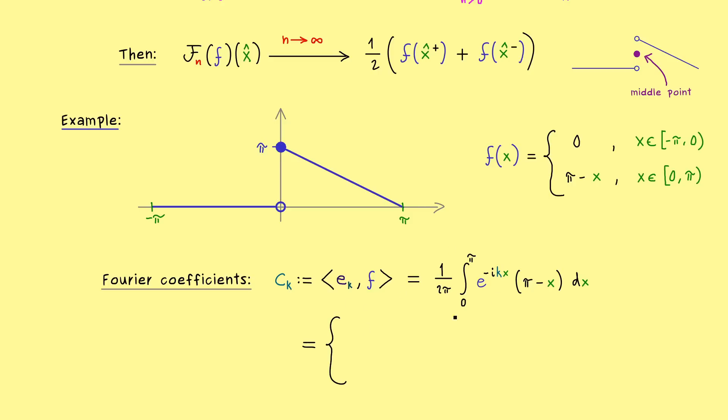However, in order to do that, we have to take out the case k equals zero. Indeed, for this case we just have to integrate the function f. So we get out the area of this triangle here, which is exactly half of the square, which has an area of π squared. Hence we immediately get π over 4 for the case k equals zero.